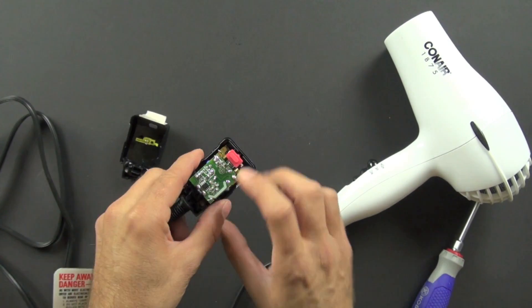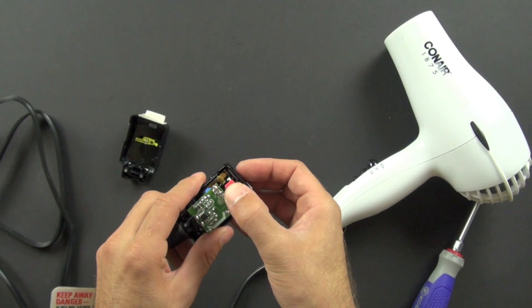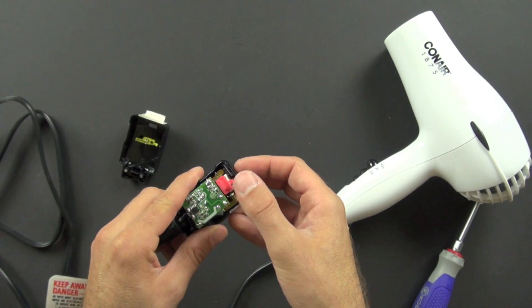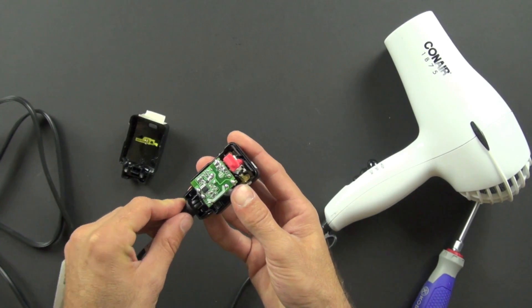So the test switch pushes on this part right here on the printed circuit board, and the reset switch is right here. So you push on the reset switch, and it will reset it. So if it gets triggered, you can still use your hair dryer again later.